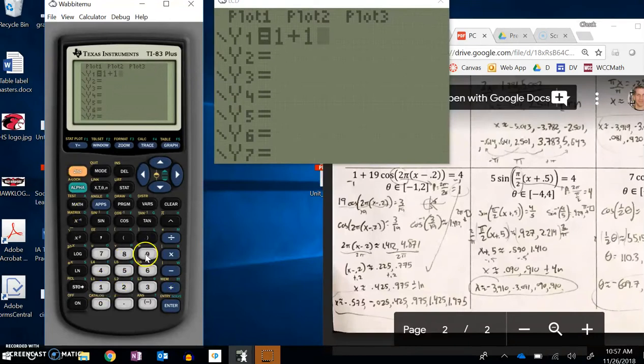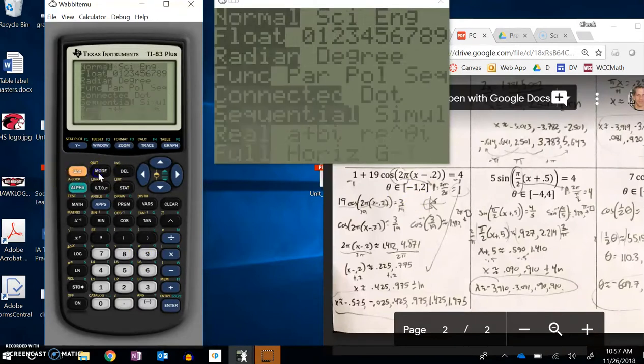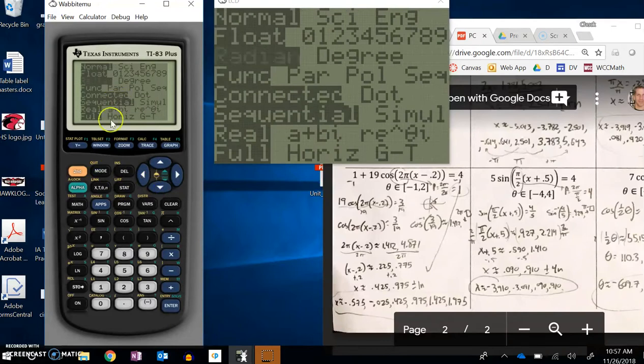So 1 plus 19 multiplied by cosine, and then notice I have the parentheses, 2π is my pi right there, times x minus 0.2. Close up those parentheses. I notice that I'm in radians, so I'm just going to make sure that my calculator is in radians. It is.